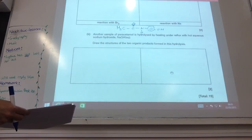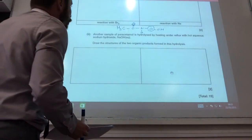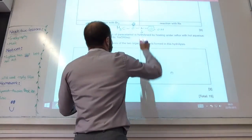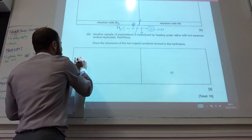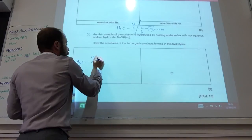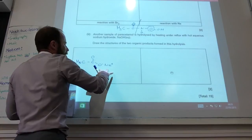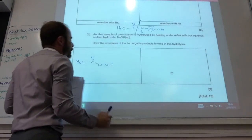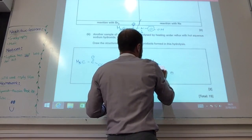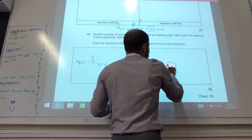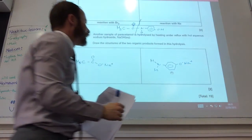Now hydrolyse paracetamol with sodium hydroxide solution. That's going to break the amide bond. I will end up with the sodium salt of the carboxylic acid, because we're in alkaline conditions, and it will also give the aminophenol product there.